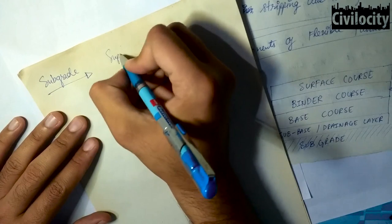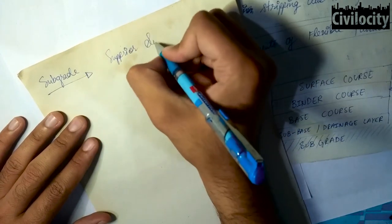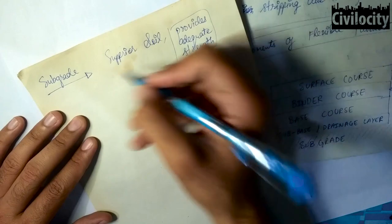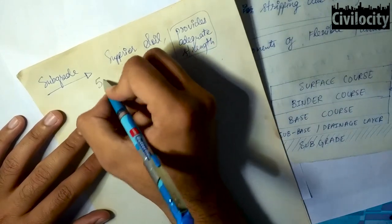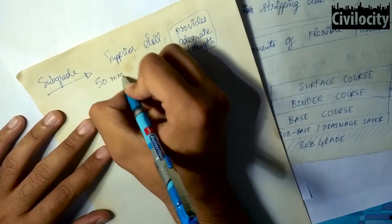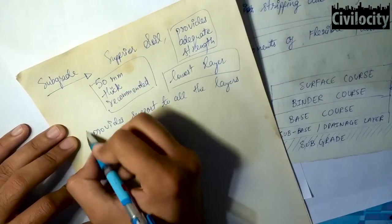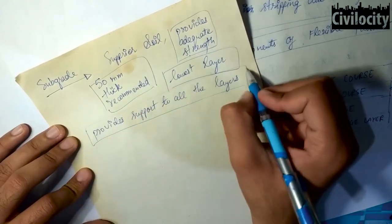The first one is the sub-grade. Sub-grade is made up of superior soils and provides adequate strength to the layers above it. 50 millimeter thickness of it is recommended and it is the lowest layer and it provides support to all the layers.